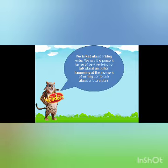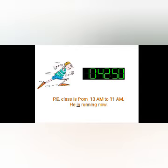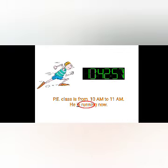We talked about linking verbs. We used the present tense of BE plus verb ING to talk about an action happening at the moment of writing, or to talk about a future plan. I can see a boy and I can see the time. P.E. class is from 10 a.m. to 11 a.m. He is running now. Because it's happening now, we will add ING to run.